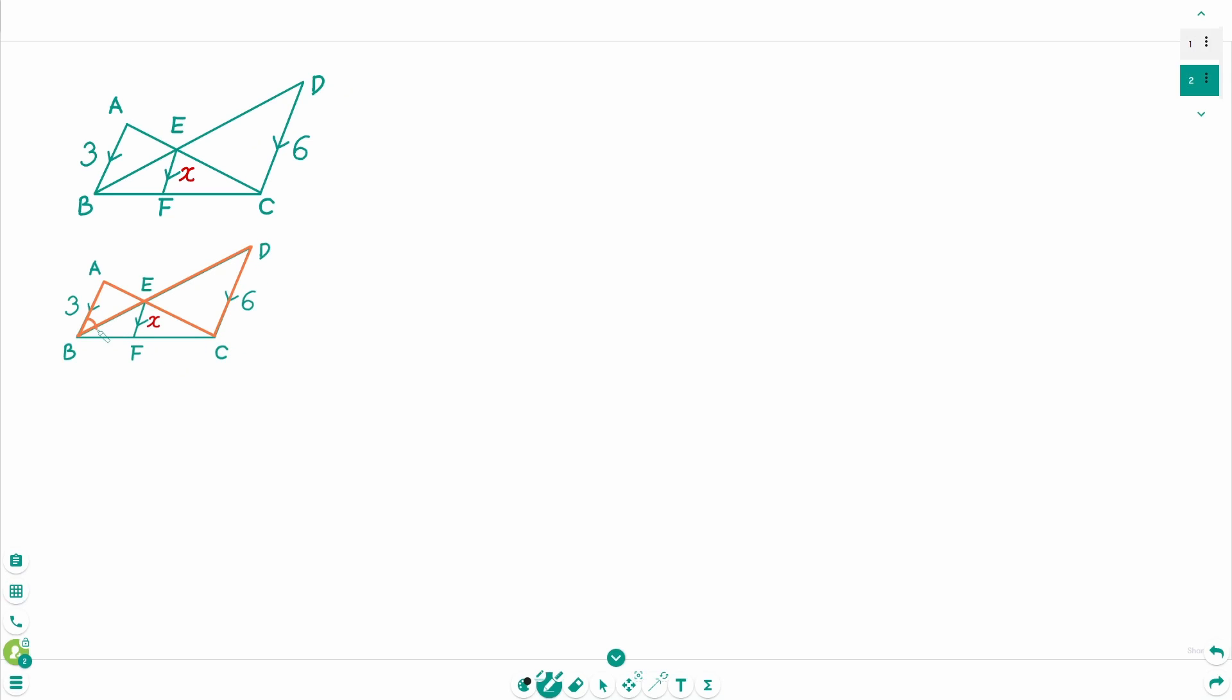So these two alternate angles are the same and these two vertically opposite angles are the same. So triangle ABE and triangle CDE are similar. If two triangles are similar then the corresponding sides are proportional. So A to A prime equals B to B prime equals C to C prime.